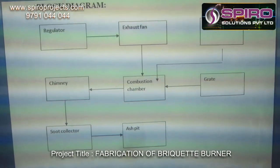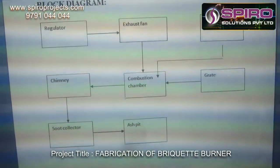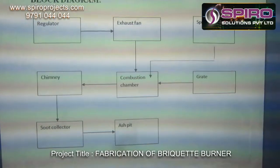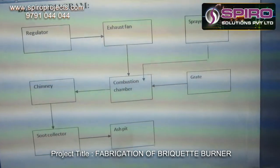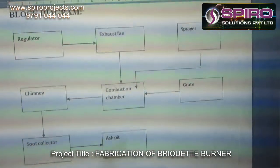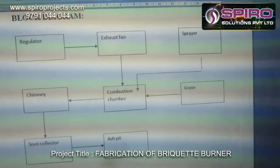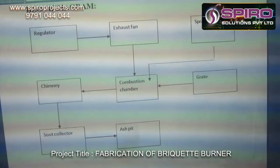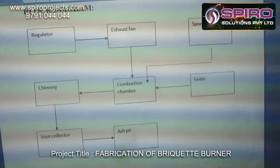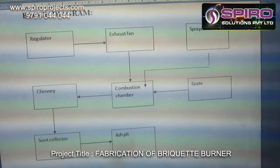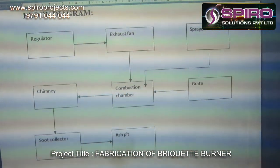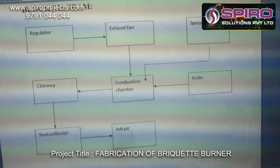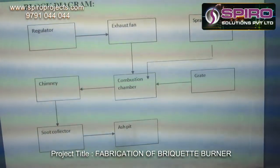The basic setup includes a regulator and exhaust fan, chimney setup and combustion chamber, spray and grate, soot collector, and ash collector. The regulator is used to regulate the air supply to the combustion chamber, and the spray air is used to spray the fuel from the combustion chamber.